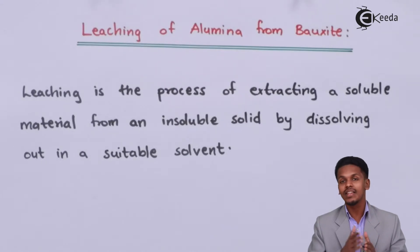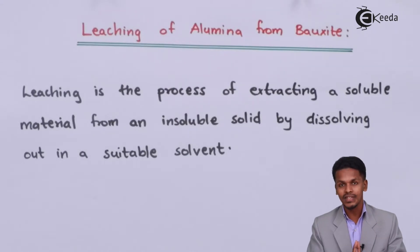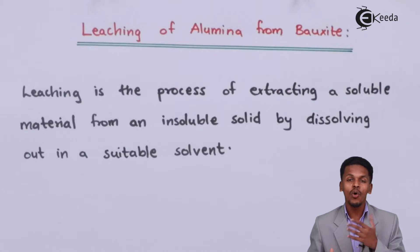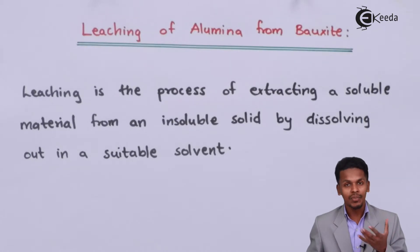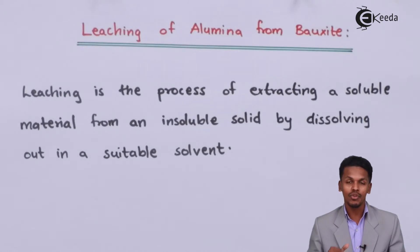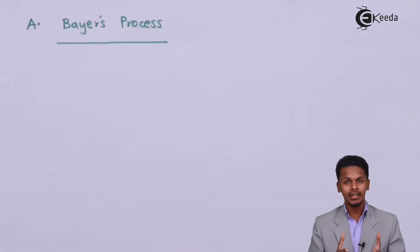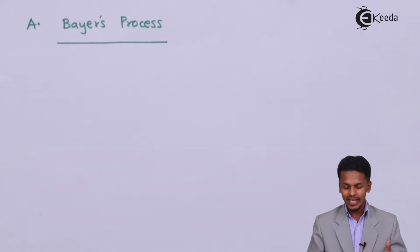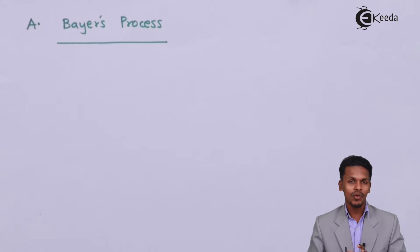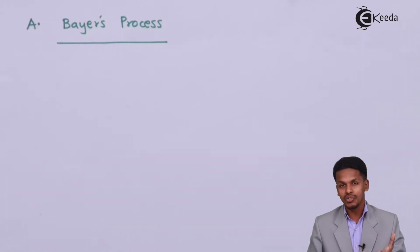The two methods are Hall's process and Bayer's process. So what are these two processes and how can we extract alumina from bauxite using them? The first method I am going to talk about is Bayer's process. Bayer's process is a method for the leaching of alumina from bauxite, and leaching is a chemical method of concentration of ore.